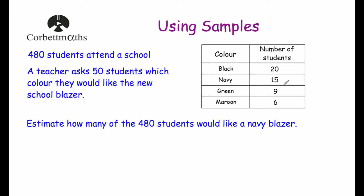Here are the answers: 20 students would like a black blazer, 15 would like a navy blazer, 9 would like a green blazer, and 6 would like a maroon blazer. If we add up the numbers we find there are 50 altogether, which makes sense because the teacher asked 50 students.